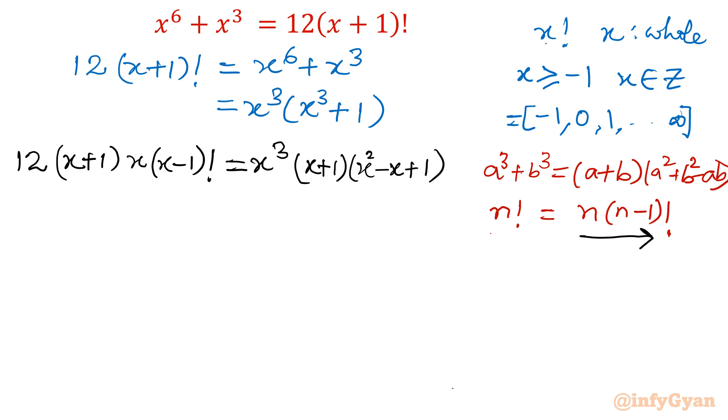Now see, because x is not equal to 0 and not equal to negative 1—it won't satisfy our equation—I can cancel both sides. So if I cancel x, then it will be 12 here. x plus 1 will be cancelled out completely. So what is left in the left hand side is 12 times x minus 1 factorial, which will be equal to x square in bracket x square minus x plus 1.